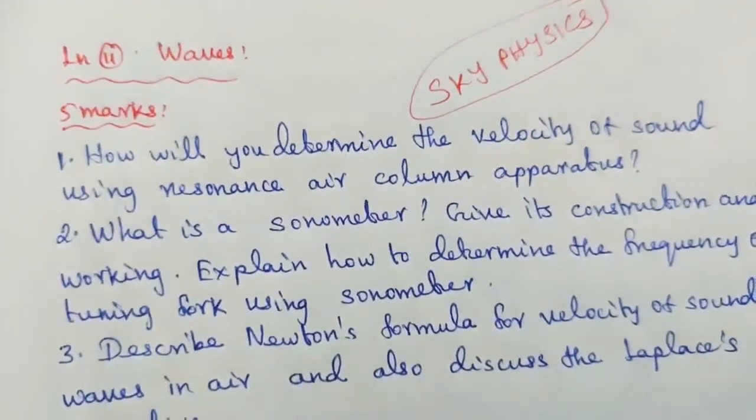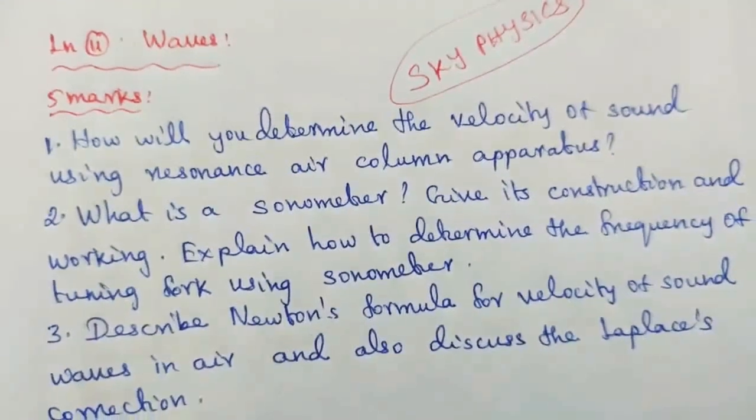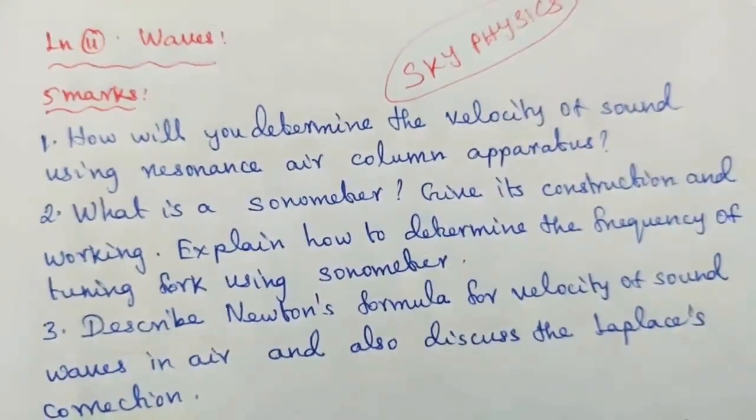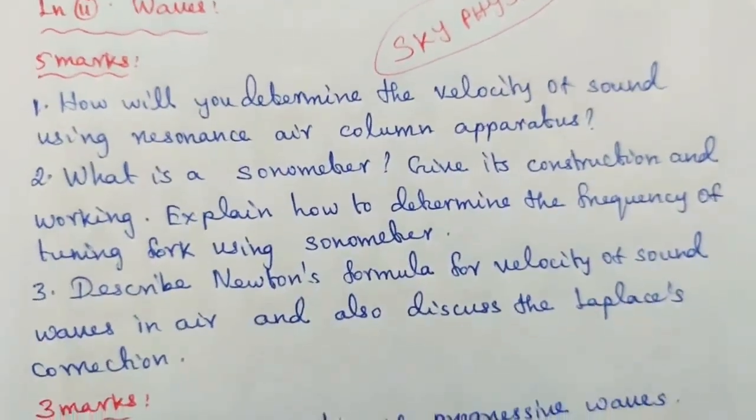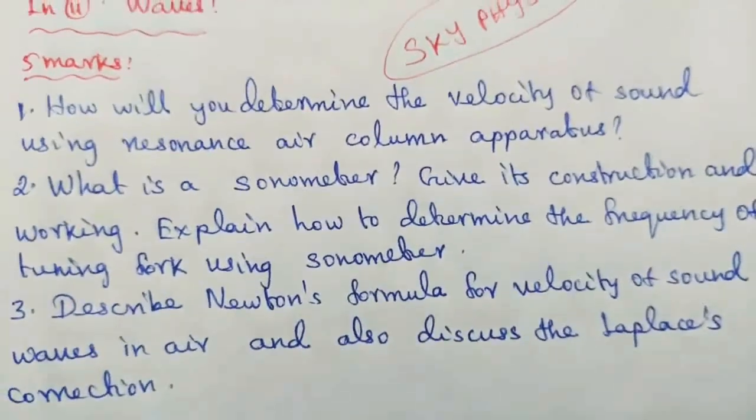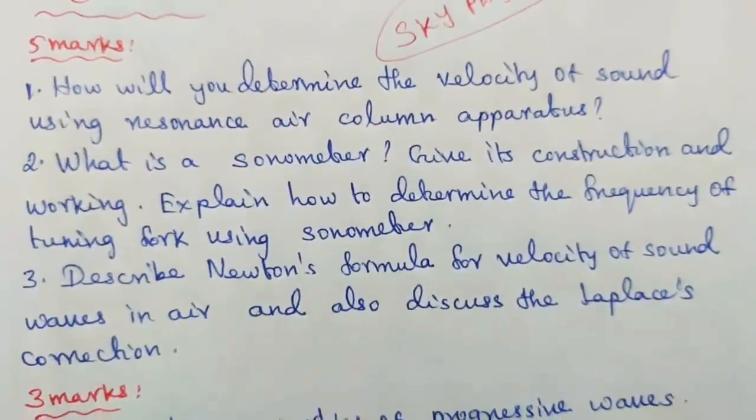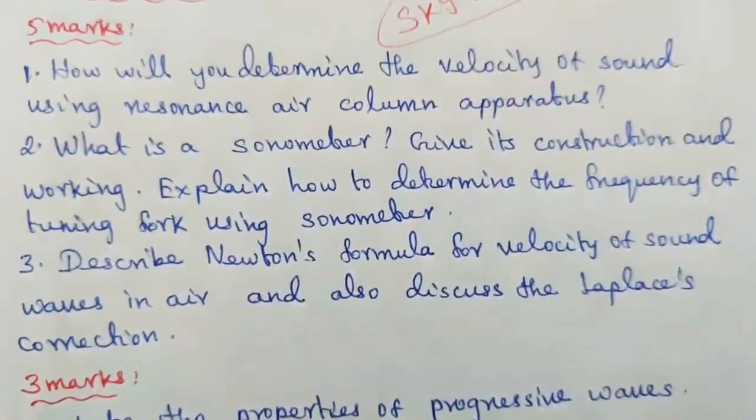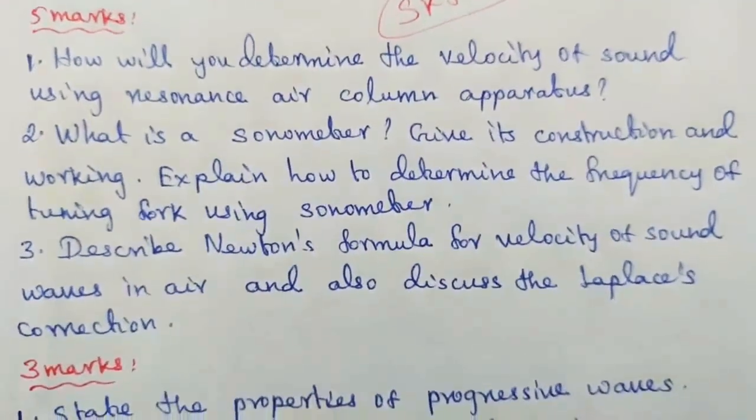Lesson 11, Waves, 5 marks. Question number 1: How will you determine the velocity of sound using resonance air column apparatus? Question number 2: What is a sonometer? Give its construction and working. Explain how to determine the frequency of tuning fork using sonometer. Question number 3: Describe Newton's formula for velocity of sound waves in air and also discuss the Laplace correction.